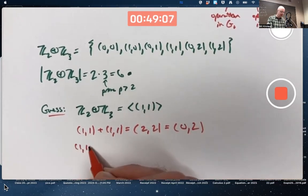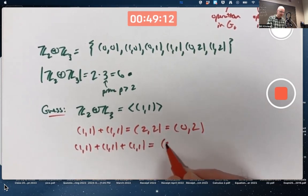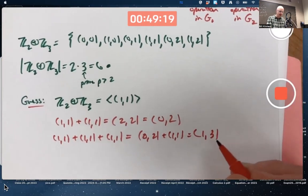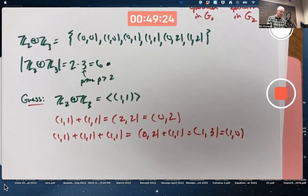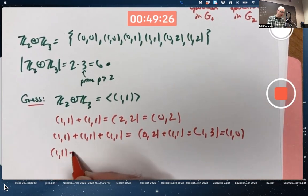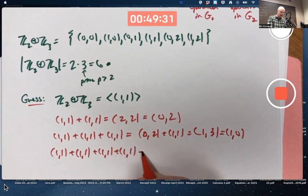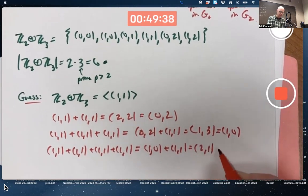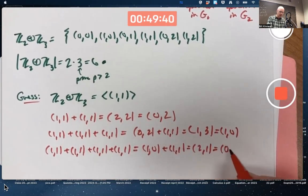If I add it to itself with 3 terms, that's like adding (0,2) to (1,1). That's going to give me (1,3), but the second component is mod 3, so that's really the same as (1,0). So that's going to give me (1,0) plus (1,1), which equals (2,1), but the first component is done mod 2, so that's really (0,1).